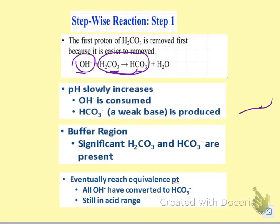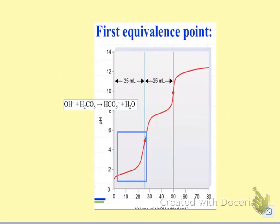Eventually, I reach the equivalence point. I've used up all the hydroxide and converted all the H2CO3 into HCO3-. I'm still in the acid range because this is acting as an acid. It's still got another proton to lose. So let's take a look at what that looks like. I'm talking about this region here.